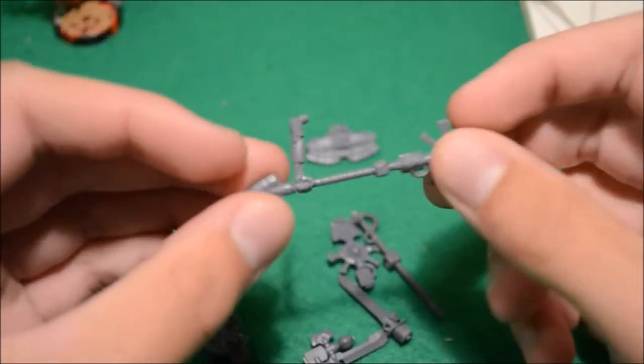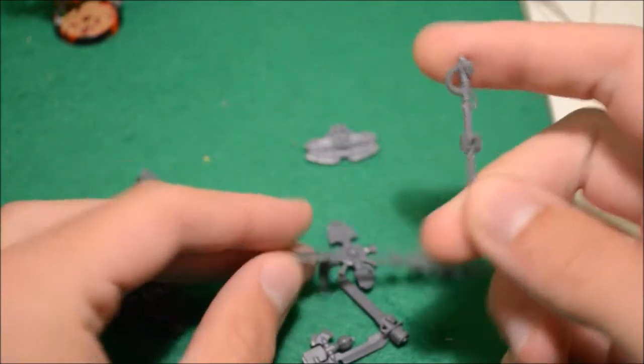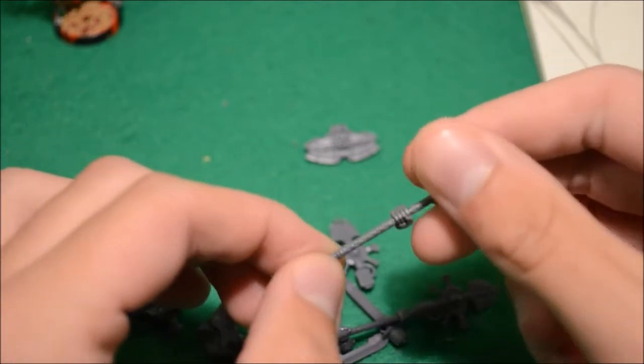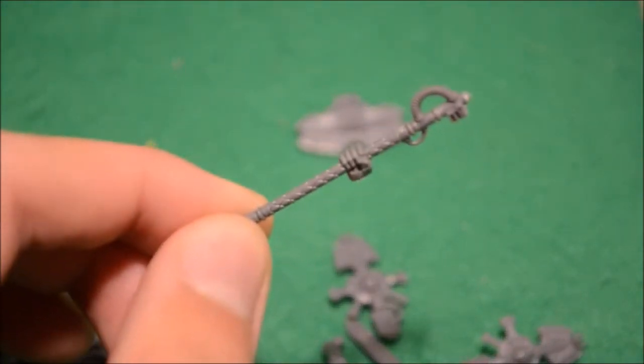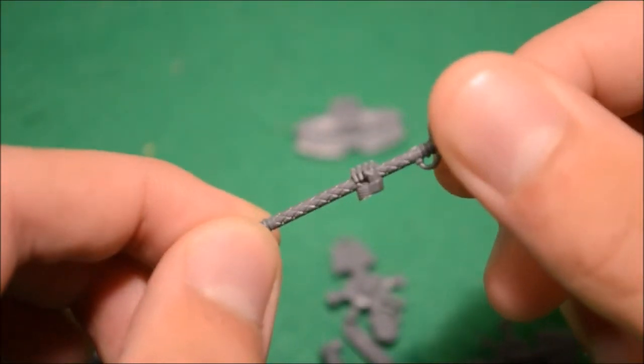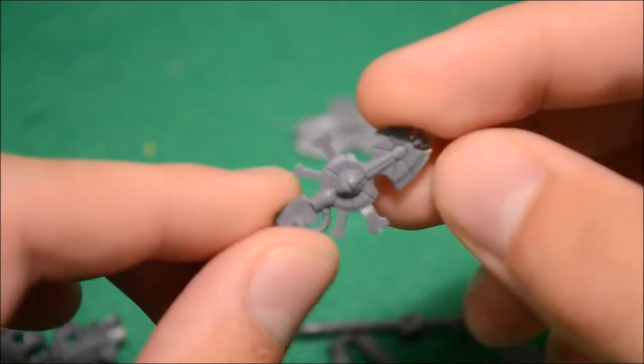For weapons we've got the staff from a Praetorian and another from a Grey Knight Terminator. The good thing about that is because he's a Terminator, he has a robotic-looking hand rather than a human hand. I think I can use this as the main part of the staff.